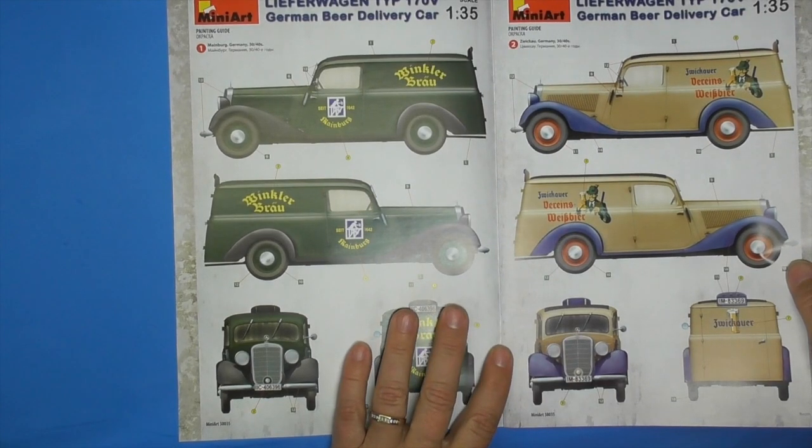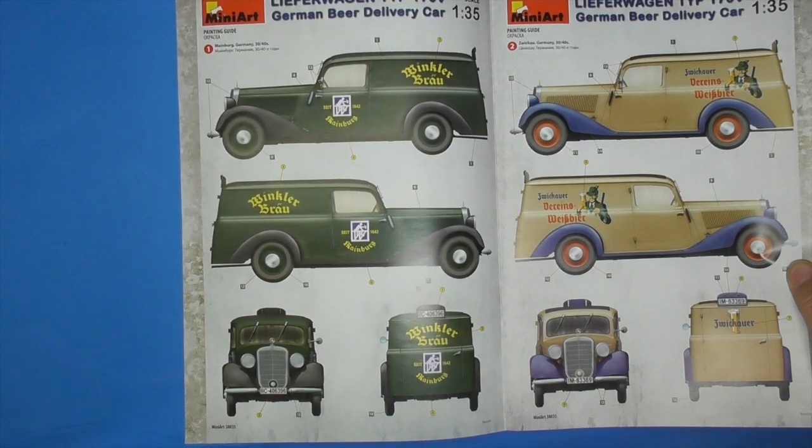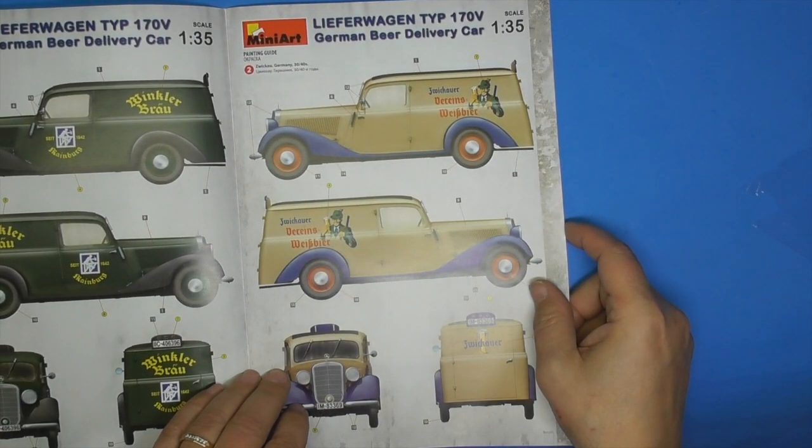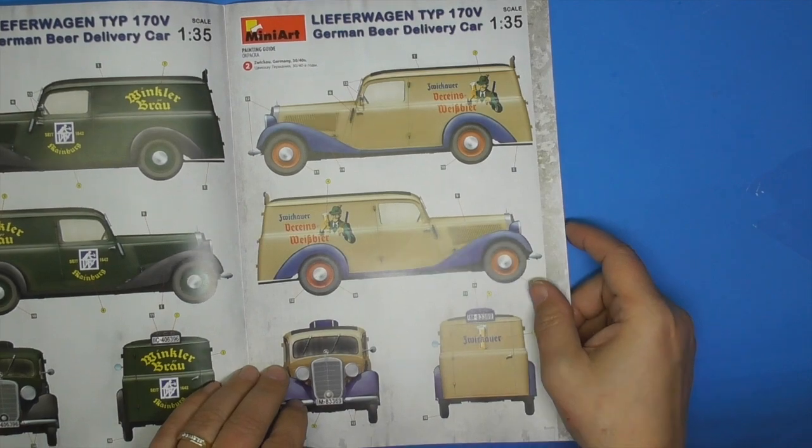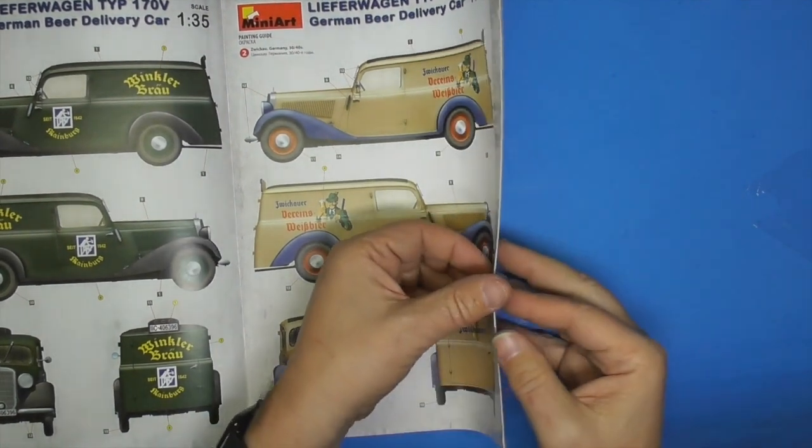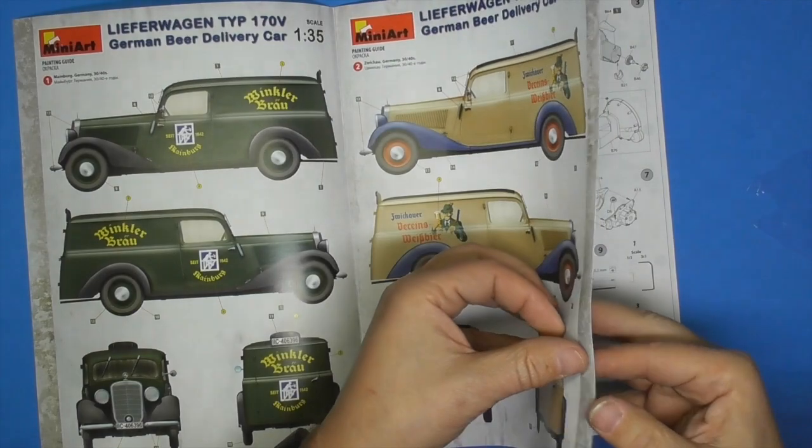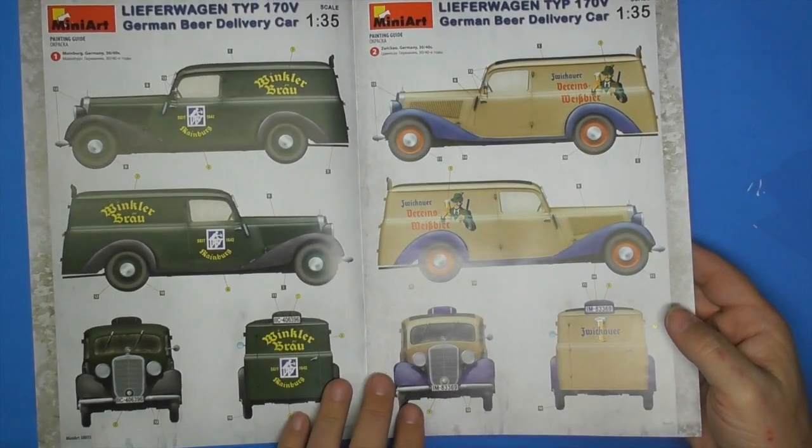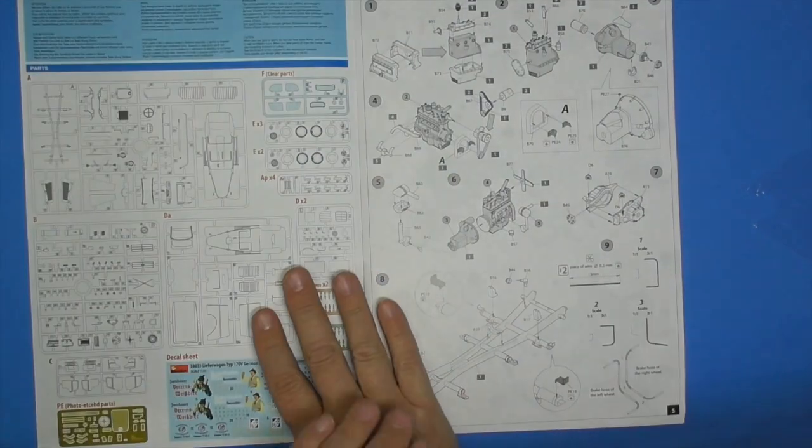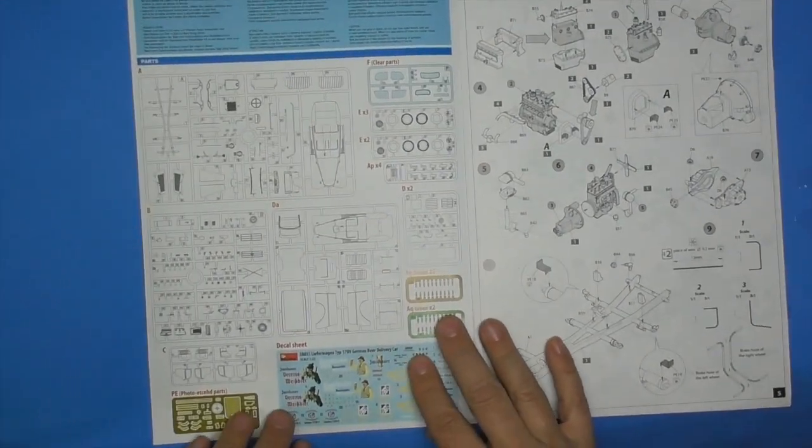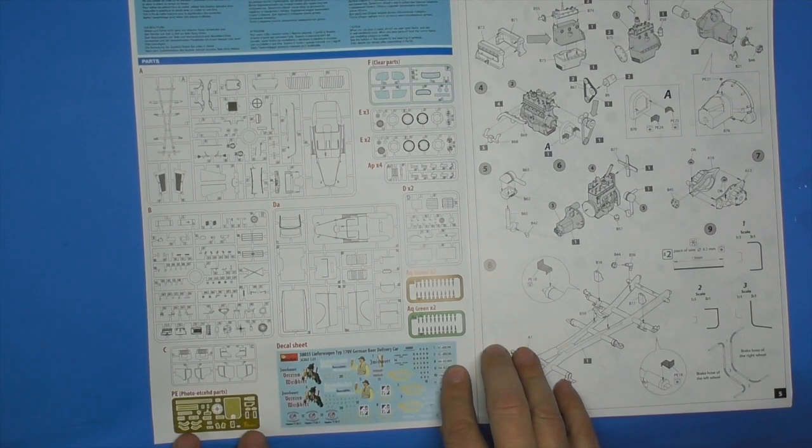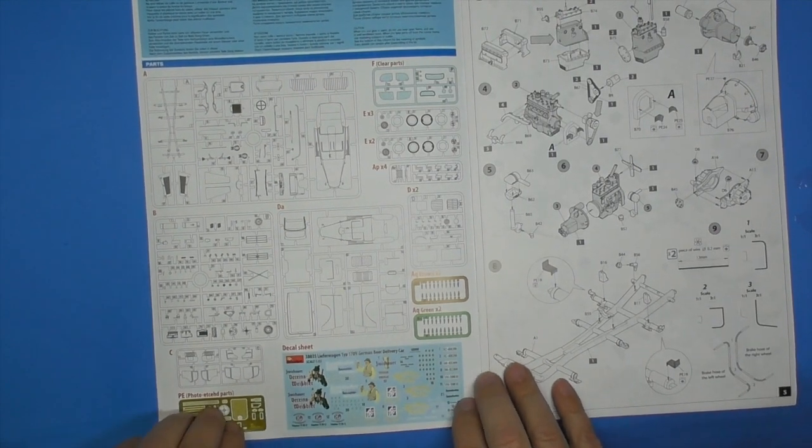Scheme number one, Mainberg, Germany, 30s and 40s. Scheme number two, don't ask me to pronounce it. It is also two-door. Where's the four-door version? There's your clear parts, sprue maps, decals, photo etched parts. It doesn't have anything blued out that you're not using. Which, of course, you can't use two frames. Two fenders.